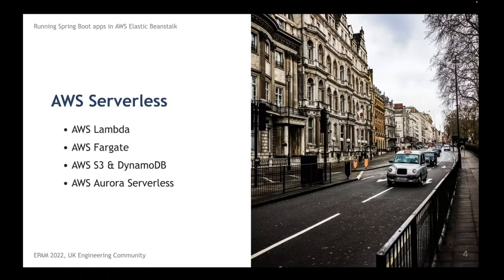For example, if you're familiar with GraalVM, it allows you to build a Docker image which can then be used to run on Lambda. There are many options available. Speaking about Fargate — Fargate is a serverless platform which allows you to run Docker containers in the cloud. On the previous session we tried to start a simple Java application using Elastic Container Service, and we did it using Fargate.